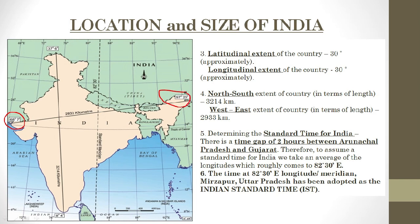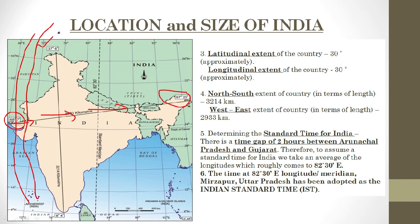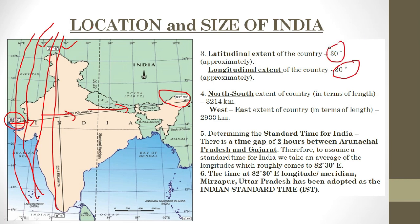Starting from 68 degrees 7 minutes east and moving east, we find longitudes at 69, 70, 72, 73, 74, 75, 76, and so on — just like we counted latitudes. Almost 30 longitudes of this kind pass through India, from Gujarat to Arunachal Pradesh. So approximately there is a difference of 30 degrees, and this tells us the longitudinal extent of the mainland of India.